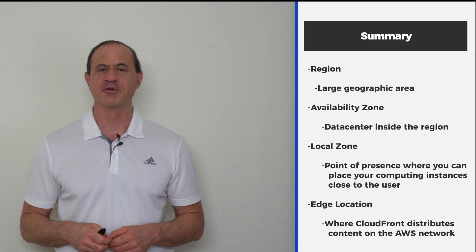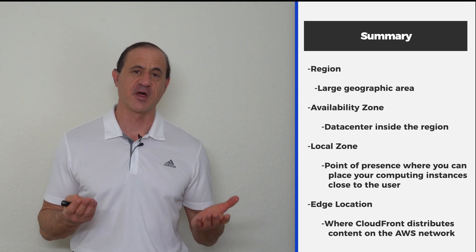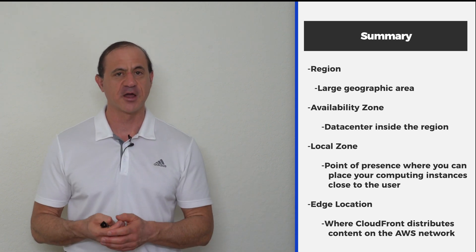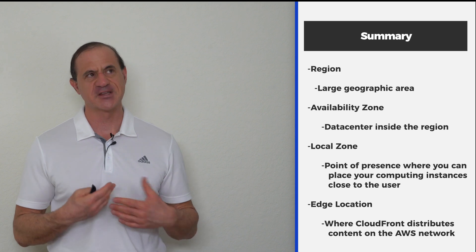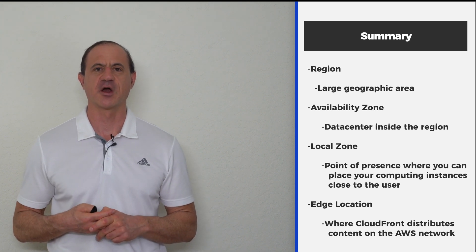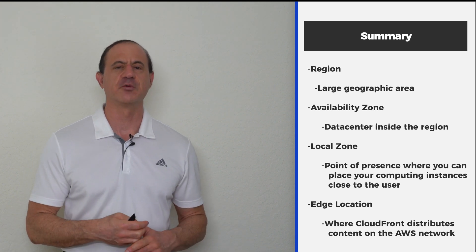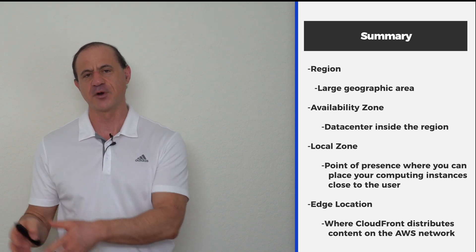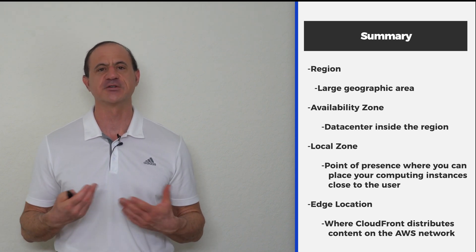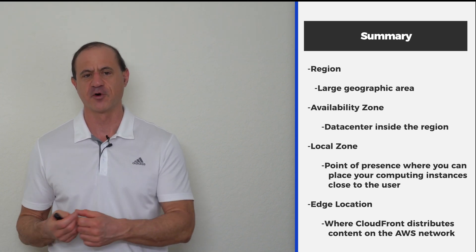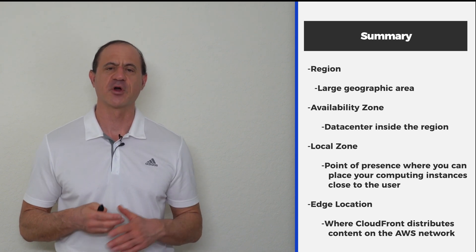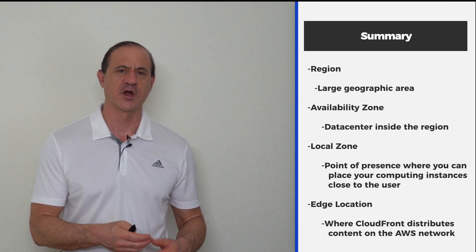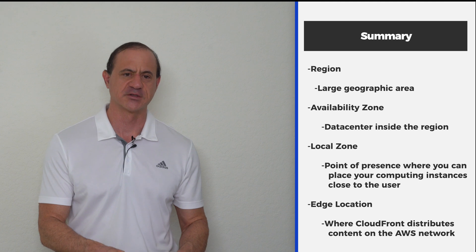To summarize, we've got four different environments. A region, which is a large geographic area. An availability zone, which is a data center inside of that large geographic area. A local zone, which is a point of presence closest to you where you can house your computing performance in some cities. And edge locations, which is basically where CloudFront works and distributes content on the AWS network.